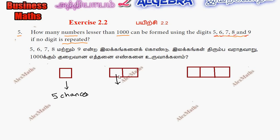For two-digit numbers, the first digit has 5 chances. Since no digit is repeated, the second digit has 4 chances. So two-digit numbers = 5 × 4 = 20.